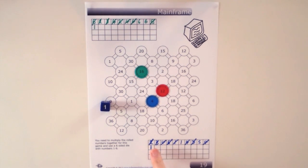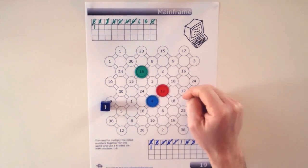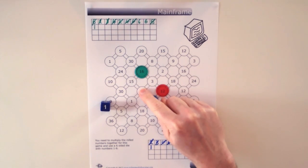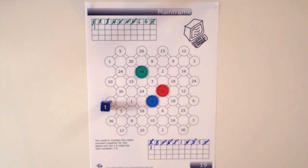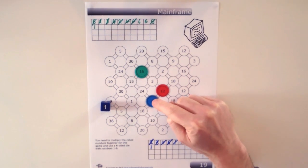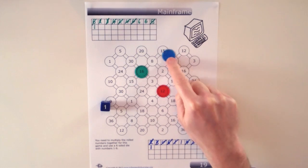So players will now continue rolling the die adding numbers to their grid until they have got some more numbers they can multiply together to move further across to the other side. And the winner is the player who reaches the other side first.